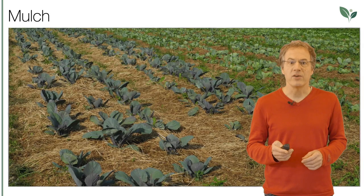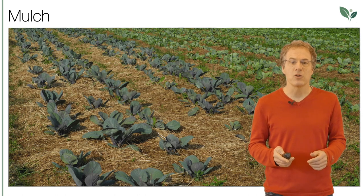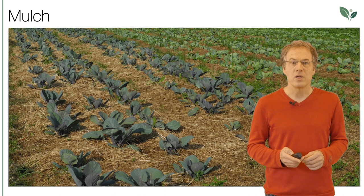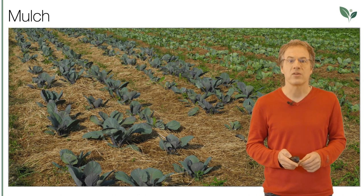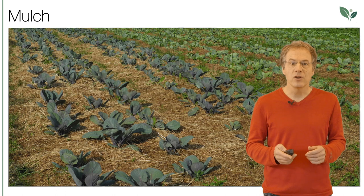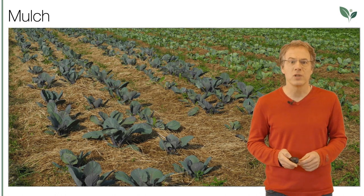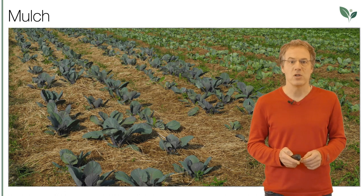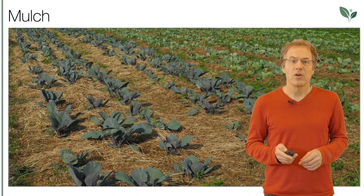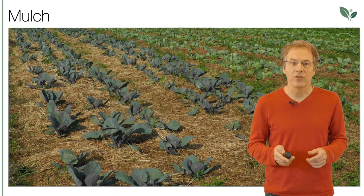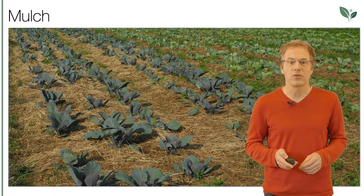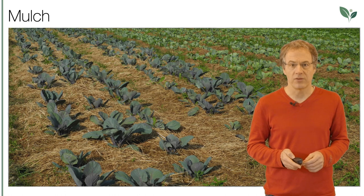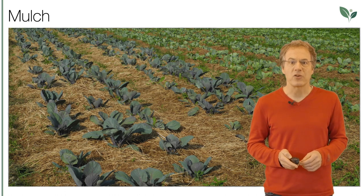Protecting the soil in vegetable cultivation also means growing many crops in mulch. The mulch layer protects the soil over the summer and into the autumn. The plants benefit from additional nutrients that enter the soil through the composting process of the mulch layer. The plants form many fine roots directly at the mulch-soil transitional space, because moisture and nutrient supply are optimal over long periods. There are now mulch planting machines that allow planting directly into the mulch.